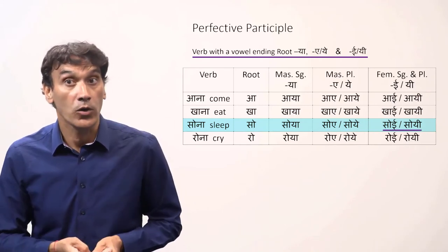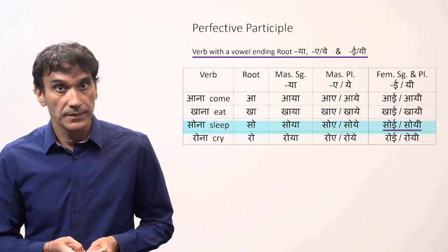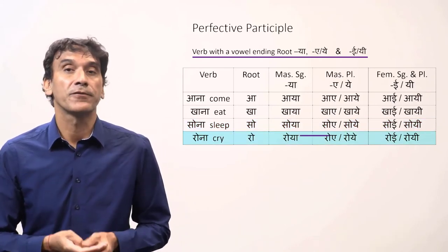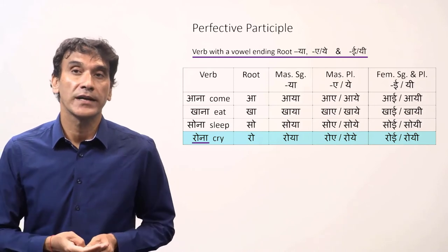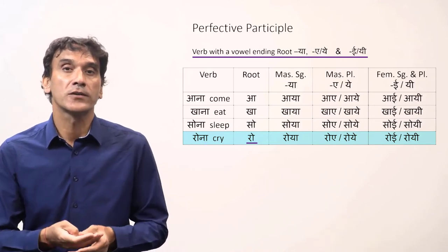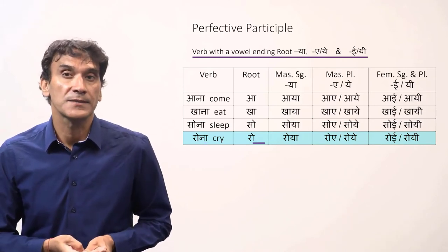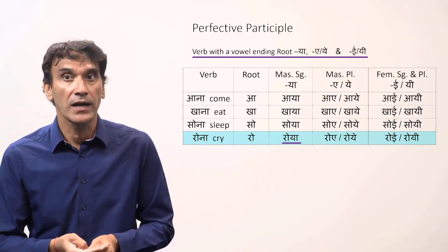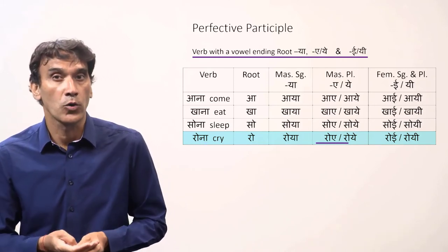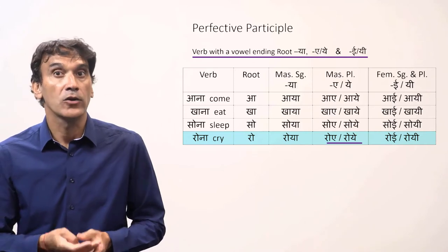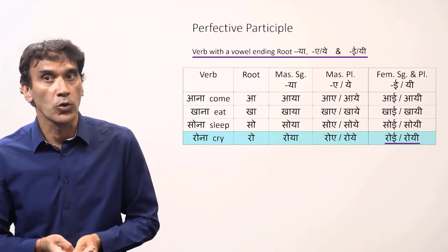Similarly, for rona, to cry, 'ro' is the root. The participles are roya for masculine singular, roye or roye for masculine plural, and roi or roi for feminine singular and plural.